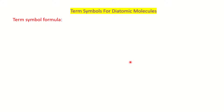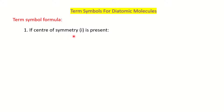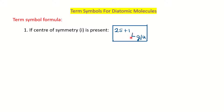Term symbols for diatomic molecules. We will first see what is the general formula for a term symbol. There are two cases. For a diatomic molecule that has a center of symmetry — and if you have learned group theory, you will know what that means — the formula for the term symbol will be ²ˢ⁺¹LG/U, where 2S+1 is the multiplicity, S is the spin, L is based on the orbital, and G or U is based on the symmetry of that orbital.